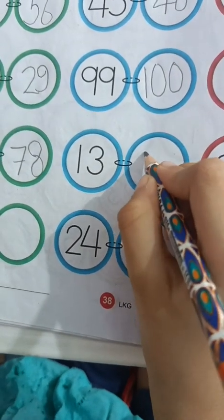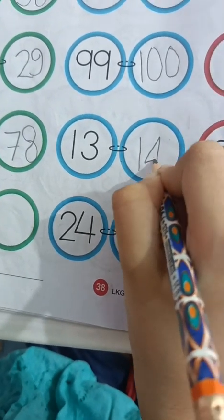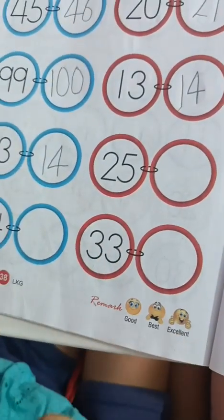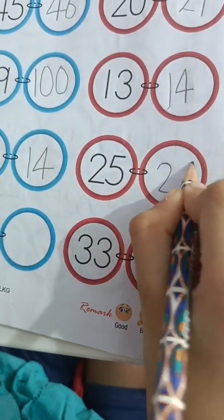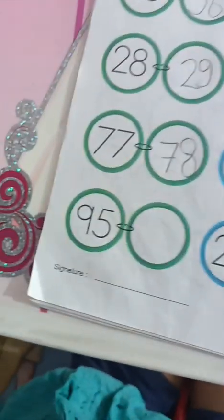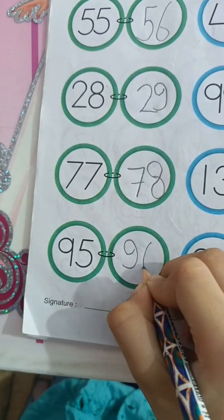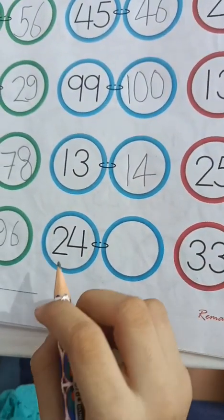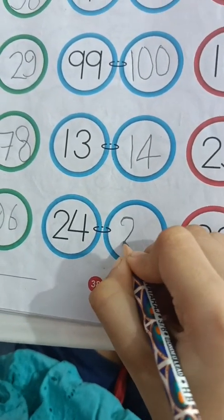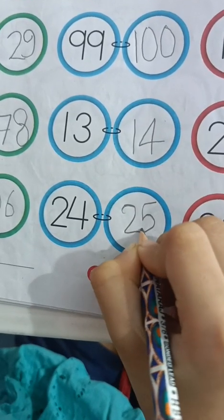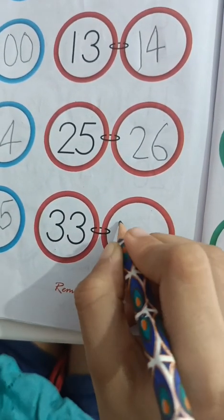13 → 14, 14 comes after 13. 25 ke baad aata hai 26. 95 ke baad aata hai 96. 96 comes after 95. 24 ke baad aata hai 25. 25 comes after 24. 33 ke baad aata hai 34.